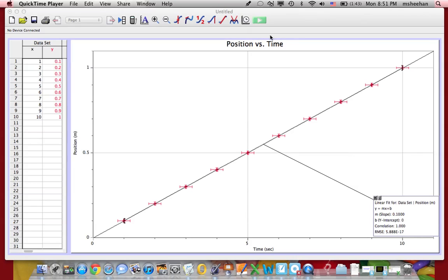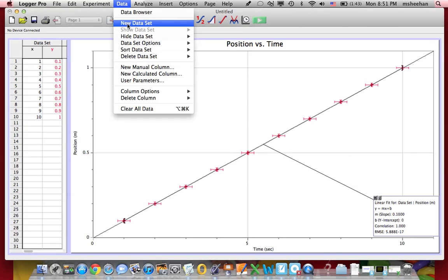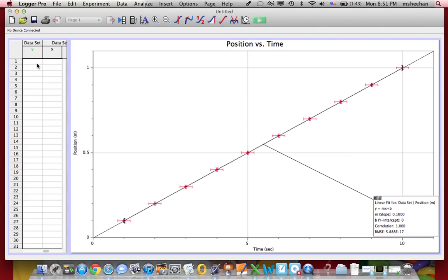First thing we have to do is we've got to make a new data set. So I'm going to go up to Data, New Data Set, and you'll see a new one pop up in our table here. So what we want to do is we want to graph to find the maximum error in the slope. We want to graph that spot right there.